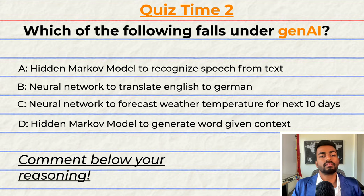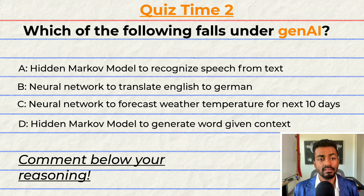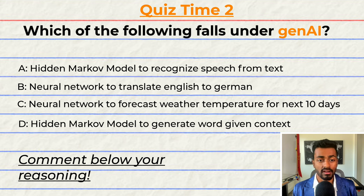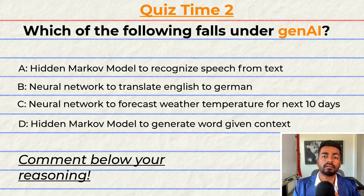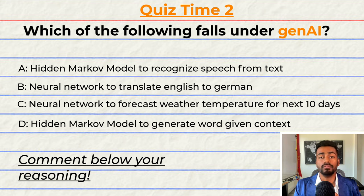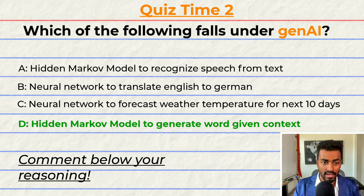Quiz time! Have you been paying attention? Which of the following falls under Gen AI? A: A hidden Markov model to recognize speech from text. B: A neural network to translate from English to German. C: A neural network to forecast weather temperatures for the next 10 days. Or D: A hidden Markov model to generate a word given context. Note that multiple answers may be correct. The correct answer is D. Can you tell me why? Give your reasoning in the comments below.